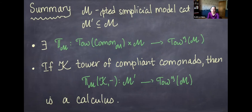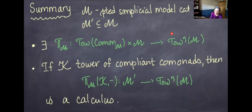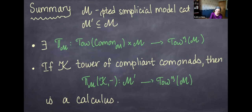To summarize: in the context of a pointed simplicial model category with a subcategory, we have a bifunctor associating to a tower of comonads and an object in M a sequence of approximations. We have a way of producing tower functors, and as long as the input is a tower of compliant comonads, this gives us a calculus. Now we're motivated to figure out how to come up with towers of compliant comonads.